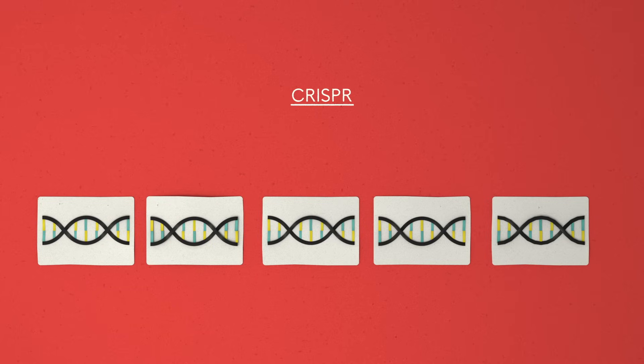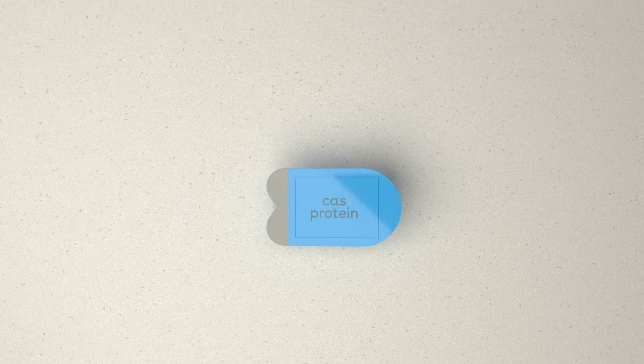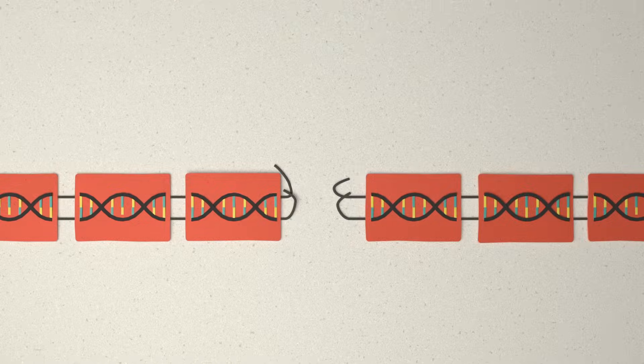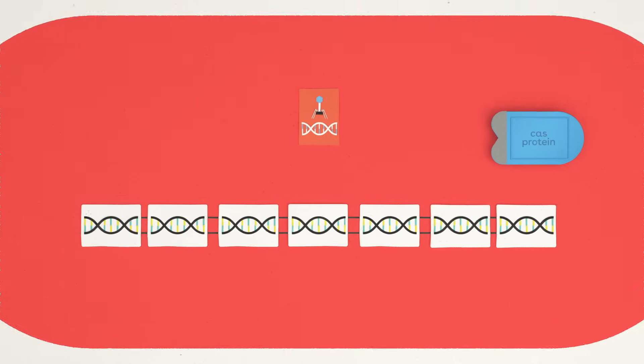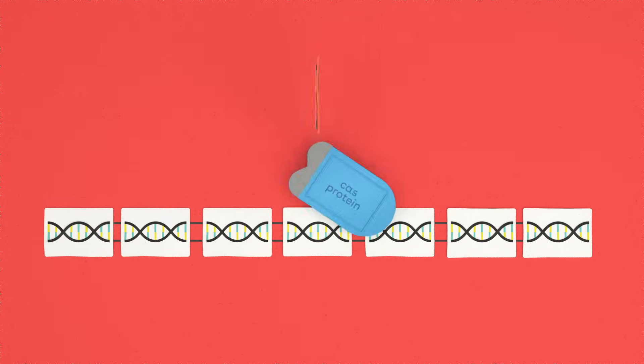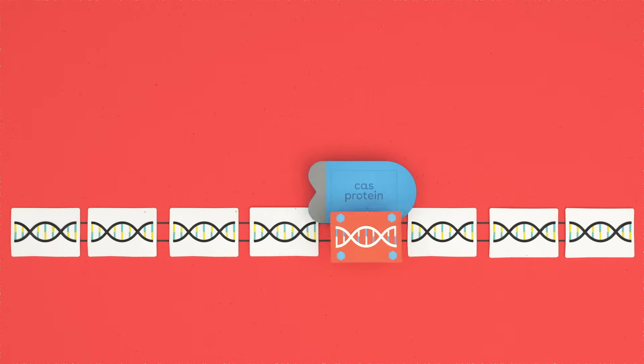The second are Cas, or CRISPR-associated proteins, which chop up DNA like molecular scissors. When a virus invades a bacterium, Cas proteins cut out a segment of the viral DNA to stitch into the bacterium's CRISPR region, capturing a chemical snapshot of the infection.